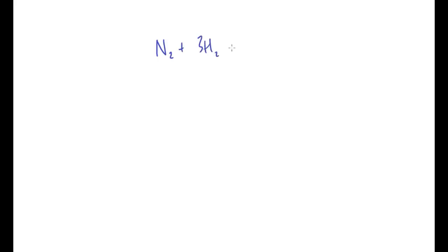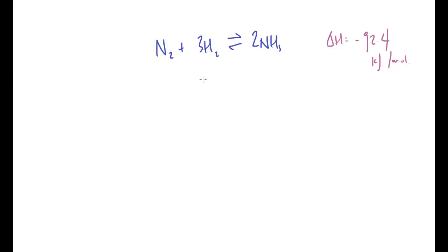Now one more example - the Haber process. Nitrogen gas reacting with hydrogen gas to produce ammonia gas, with an enthalpy change of -92.4 kJ/mol. All species are gases. This is the Haber process - the production of ammonia through the reaction of nitrogen and hydrogen, using an iron catalyst. The catalyst won't change the yield, but it will speed up the time it takes to reach equilibrium and help keep running costs down.